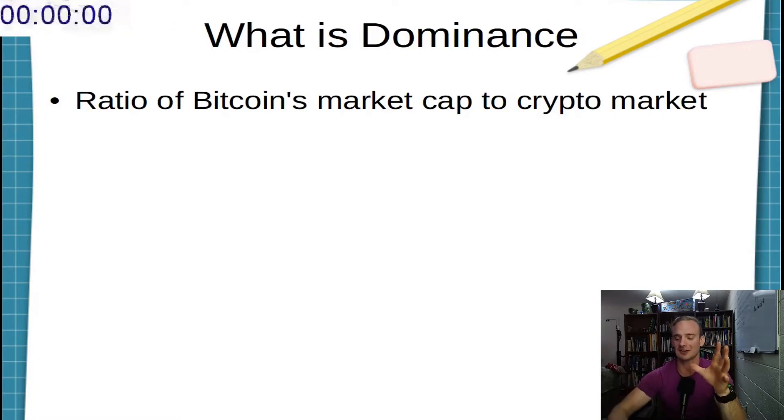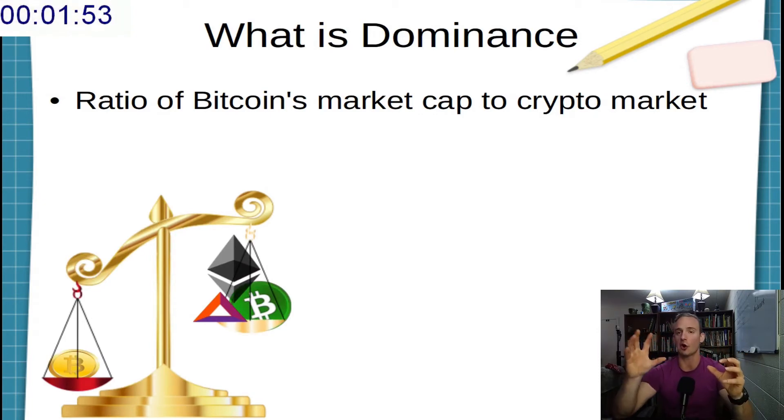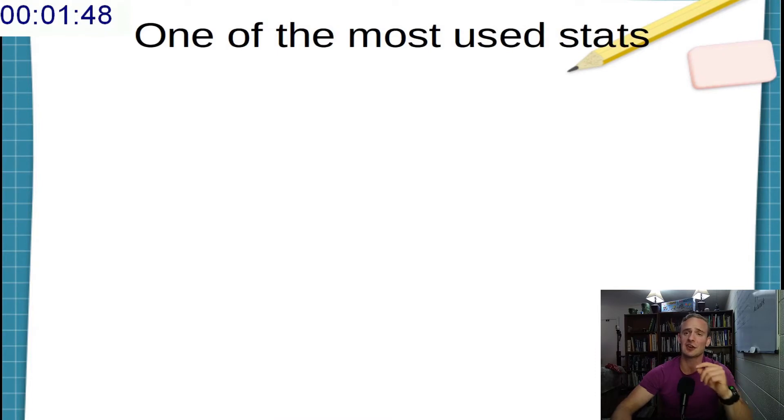Now, Bitcoin dominance is simply a ratio of Bitcoin's market cap to the market cap of the cryptocurrency market in general. So we're comparing Bitcoin to altcoins. And when we say altcoins, that just means a coin that is not Bitcoin. It doesn't mean it's a good coin or a bad coin. It's just not Bitcoin.